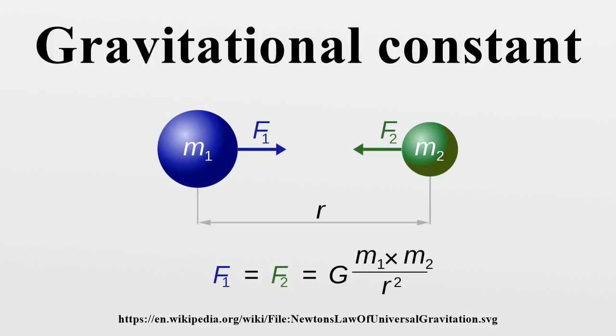The quantity GM, the product of the gravitational constant and the mass of a given astronomical body such as the Sun or Earth, is known as the standard gravitational parameter and is denoted μ.